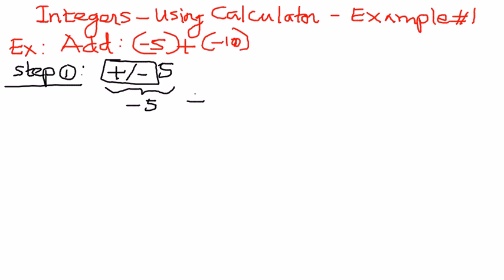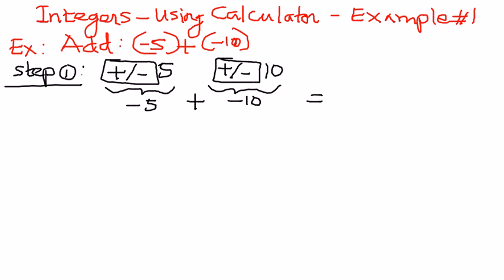And then when you add, if you press the positive/negative button and enter 10, the calculator will display negative 10. When you press equals, the calculator will display negative 15. So that is our answer. We also know that when we add a negative number to another negative number, the result is going to be a negative number — negative 5 plus negative 10 is negative 15.